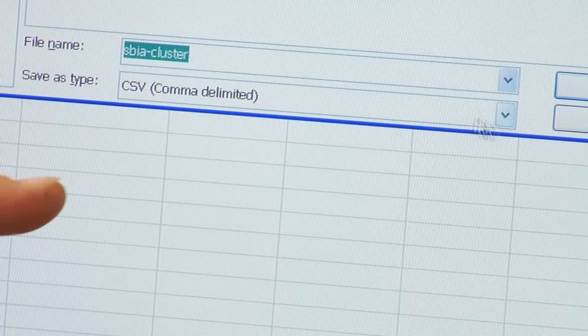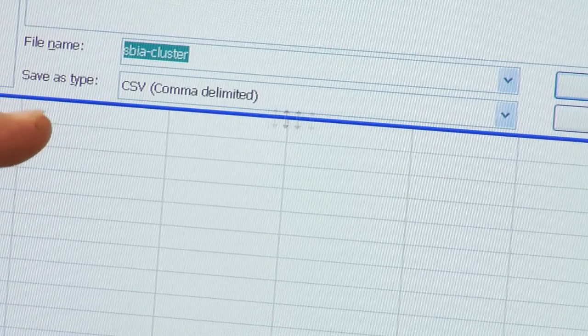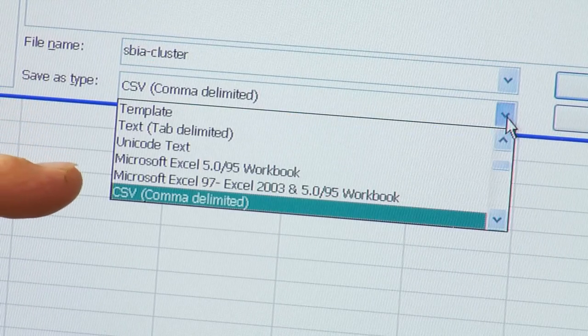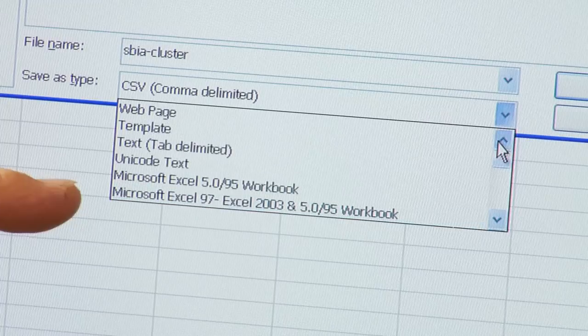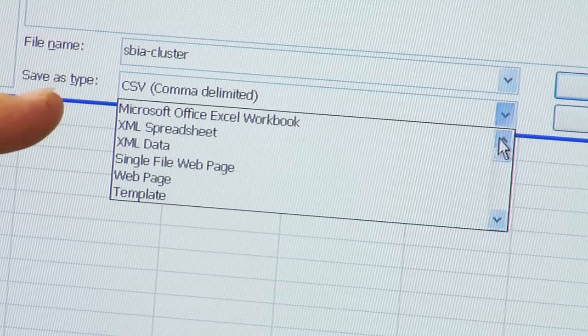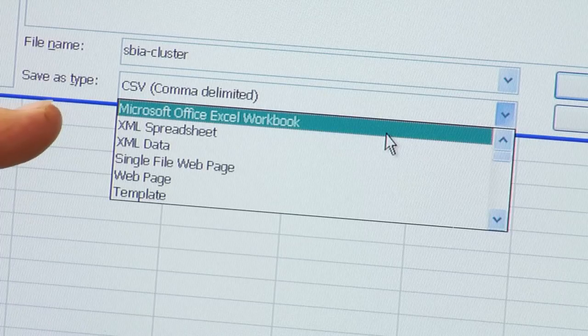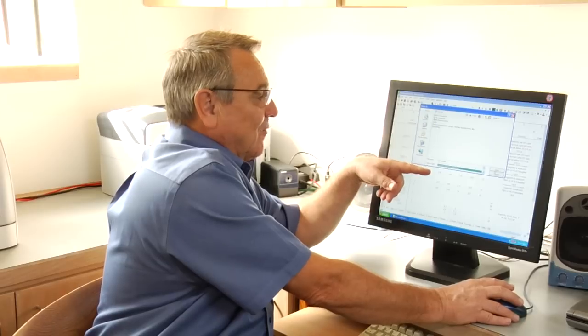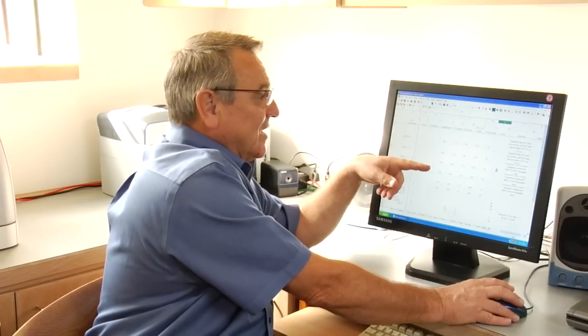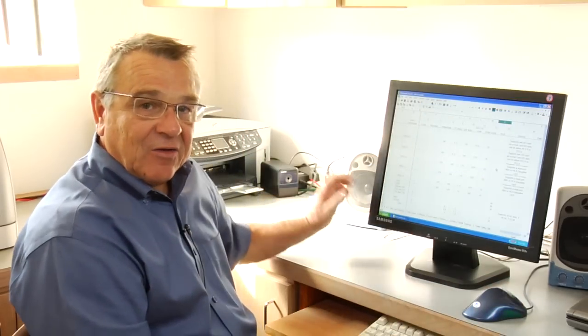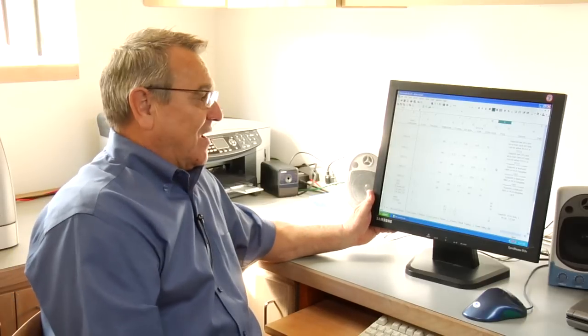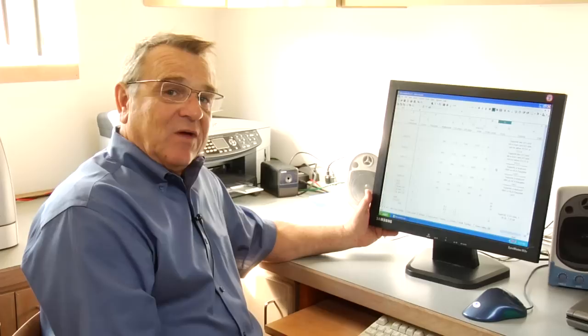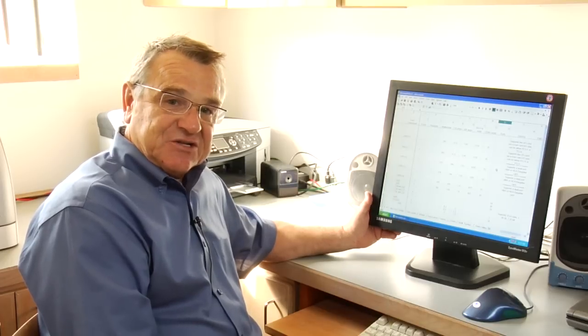I'm going to hit the drop down arrow here and I'm going to scroll until I find the Microsoft Office Excel workbook format. That is your .xls format. So I'm going to click on that and then I'm going to click on Save, and now the program is going to convert over the file to the XLS format. And when it's done converting it will have a .xls extension.